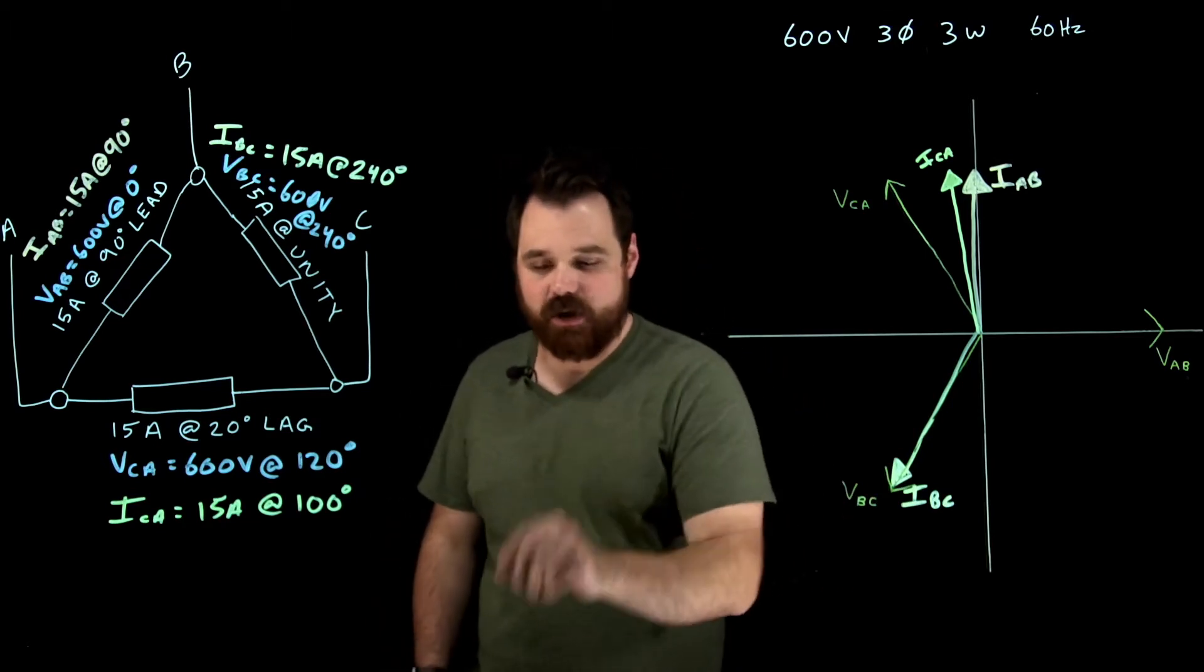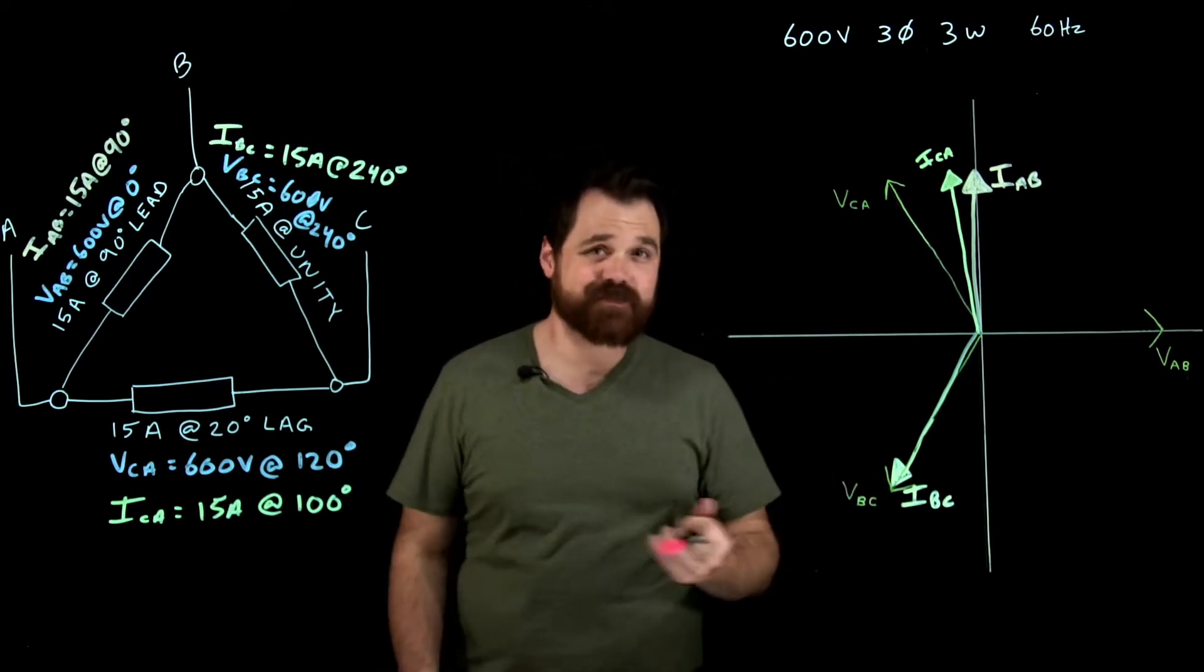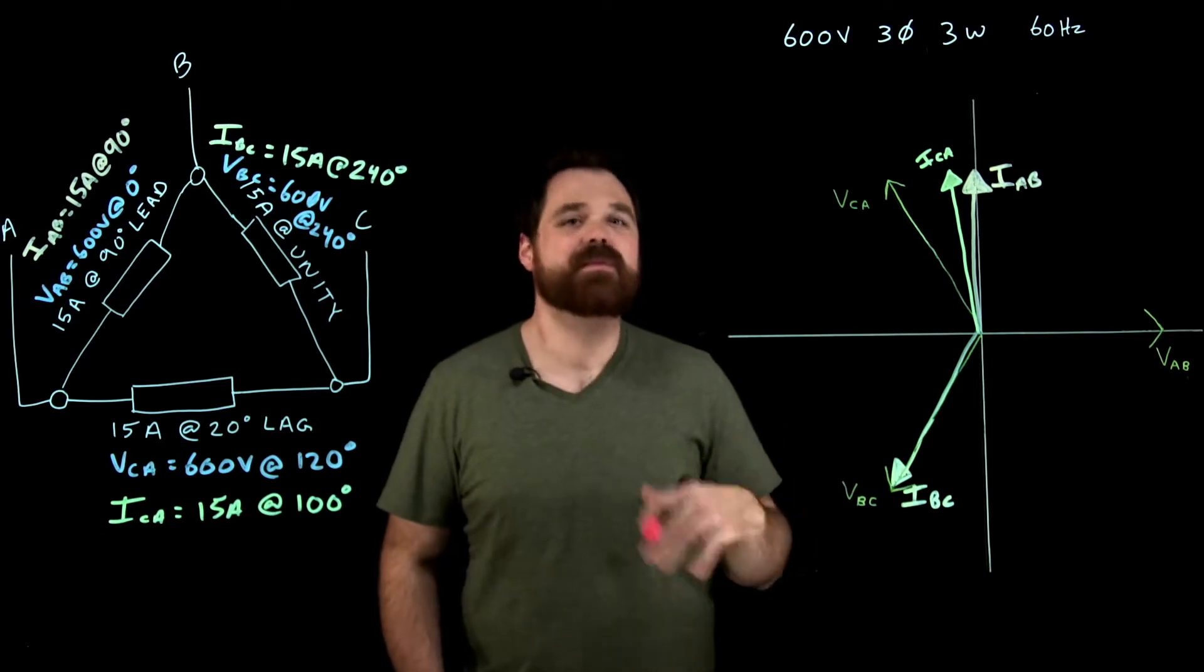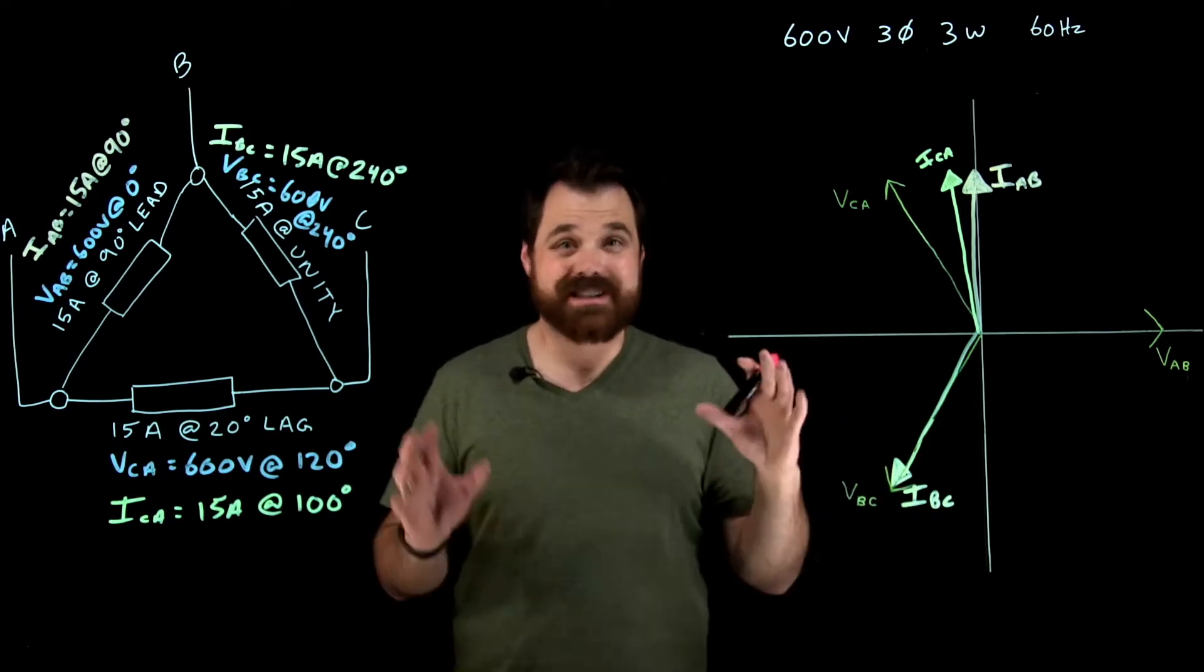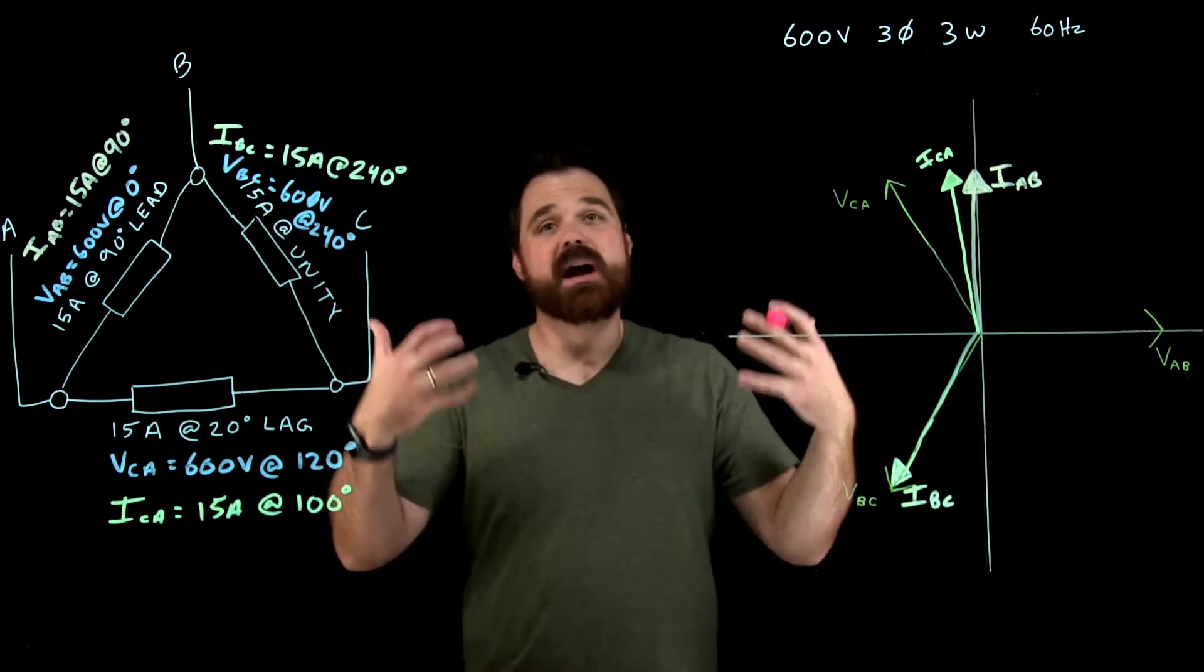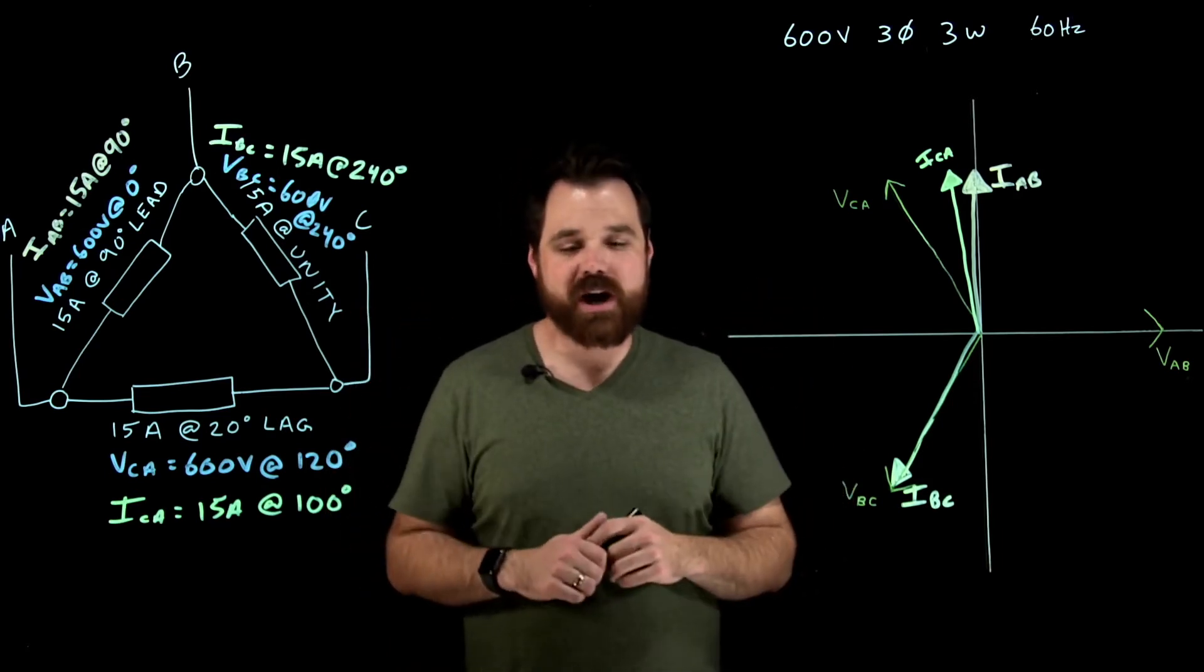Now what I want to do is now I need to calculate my line currents. Now this is where it gets a little bit tricky. We know our rules can't apply for balanced circuits. This is an unbalanced circuit, which means we have to do the math and calculate our line currents.